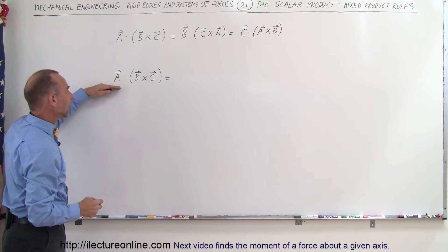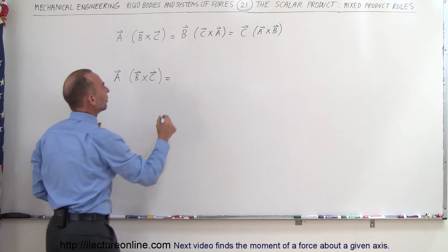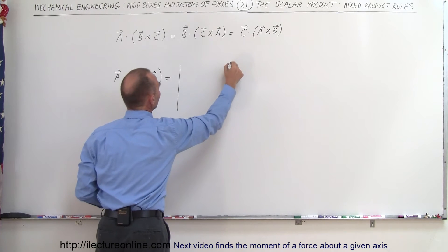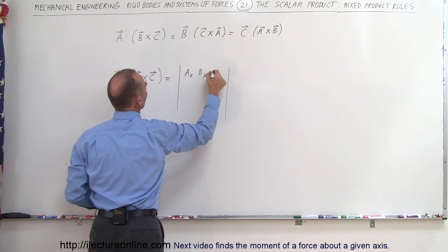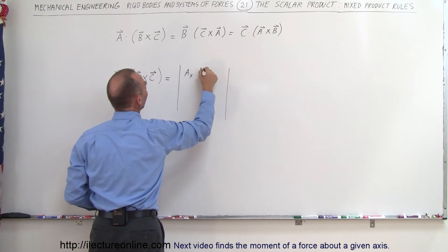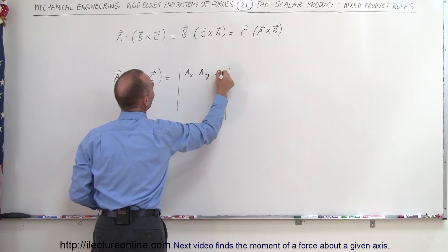Also, if you want to calculate what this is equal to, this can become equal to the matrix of A sub X, B sub X. I'll take that back. That's A sub X, A sub Y and A sub Z.